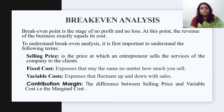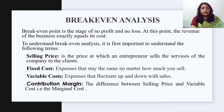To understand breakeven analysis, it is important to understand a few key terms. Selling price is the price at which an entrepreneur sells services to clients. Fixed costs are expenses that stay the same no matter how much you sell. Variable costs are expenses that fluctuate with sales, like raw material cost or direct labor cost. Contribution margin, also known as gross margin or contribution, is the difference between selling price and variable cost. Fixed cost plus the amount of profit is equivalent to contribution. Profit cannot result unless contribution exceeds fixed costs — the point of no profit, no loss is arrived at where contribution equals fixed costs.